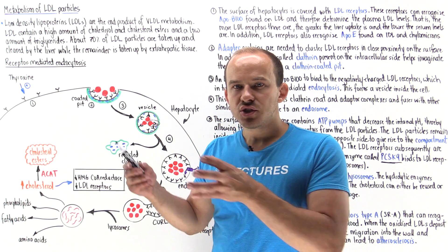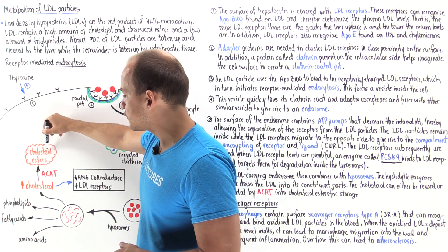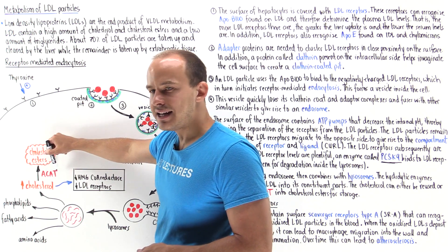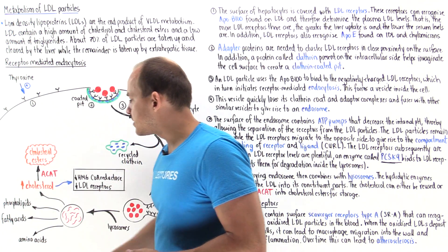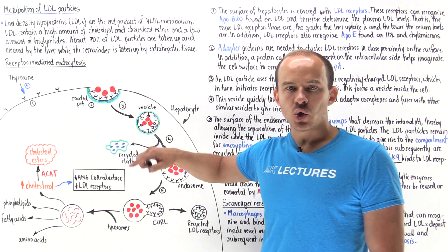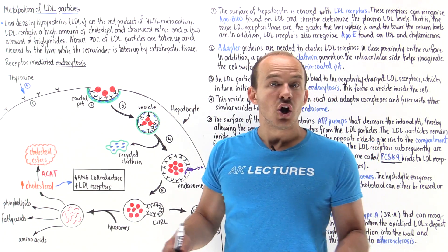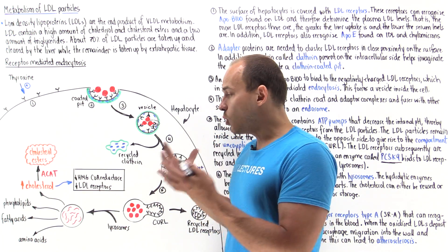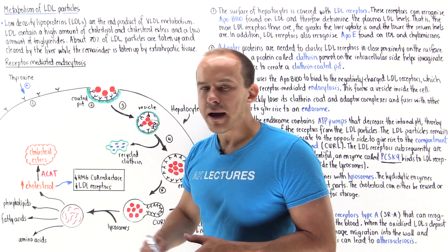Cholesterol that is not used by the cell can be stored in the liver cell in the form of cholesterol ester. The enzyme that converts cholesterol into cholesterol esters is ACAT. When we have high levels of cholesterol inside the liver cell, that activates ACAT, converting cholesterol into cholesterol ester for storage. In addition, high levels of cholesterol also decrease the production of HMG-CoA reductase, which is the enzyme that controls the rate-limiting step of the de novo synthesis of cholesterol. It also decreases the expression of LDL receptors. This negative feedback loop makes sense: if we have high levels of cholesterol inside the liver cell, we don't want to produce any new cholesterol, and we don't want to bring any more from outside the cell.